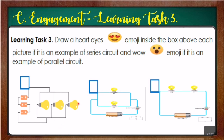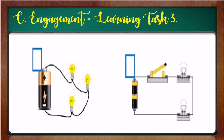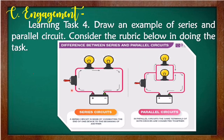For Learning Task number 3, draw a heart-eyes emoji if it is an example of a series circuit and a wow emoji if it is an example of a parallel circuit. For Learning Task number 4, draw an example of a series and parallel circuit. Consider the rubric in your learner's packet. Here is an example of the drawing of the series and parallel circuit — you may use this as your inspiration for the drawing activity.